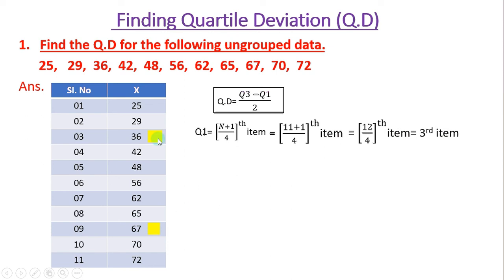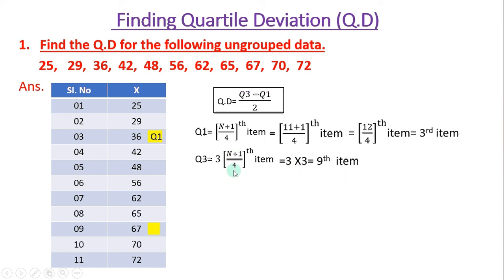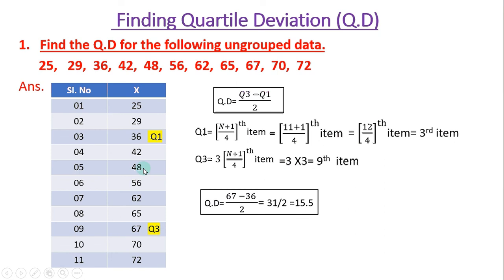So the third item is Q1. And for Q3, the formula is 3 times (n+1)/4. Since (n+1)/4 equals 3, we get 3 into 3 = 9, so Q3 is the 9th item. Substituting the values: Q1 is 36 and Q3 is 67.